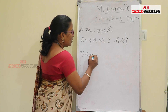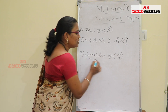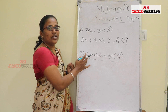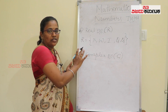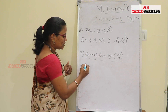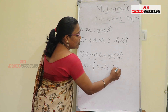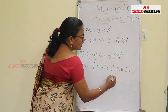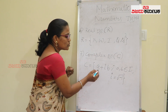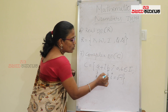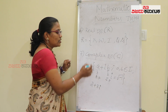The next one is complex numbers, denoted by the letter C. This complex number is not available at school level — you can see it at a higher level. It is a root of negative numbers. Complex number is a number of the form A plus IB, where A and B belong to the integer set, and I is known as the imaginary value which is equal to root of minus 1. A is called the real part and B is called the imaginary part. For example, 2 plus 3i is a complex number.